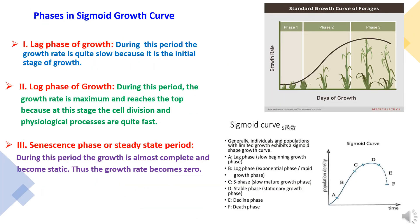Now we will study the phases in the sigmoid growth curve. The first phase is the lag phase of growth. In this period, the growth rate is quite slow because it is the initial stage of growth. The second phase is the log phase of growth, also known as the rapid phase. During this period, the growth rate is maximum and reaches the top, because at this stage cell division and physiological processes are quite fast, resulting in rapid growth of plants. The third phase is the senescence phase, where the growth is almost complete and becomes static. The growth rate becomes zero and the crop moves towards the maturity and harvesting stage.